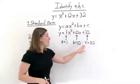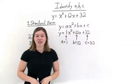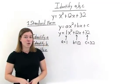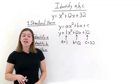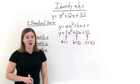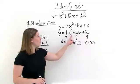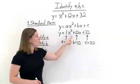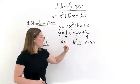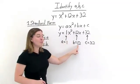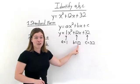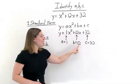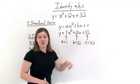We found a, b, and c in our quadratic equation. Now remember, when you're finding a, b, and c in a quadratic equation, you need to make sure to bring the sign of that number with it. So let's say that this were a negative 12x instead of a positive 12 — then b would be equal to negative 12. But since all of our numbers were positive, we have positive a, b, and c values.